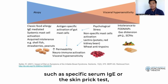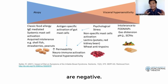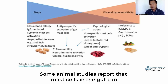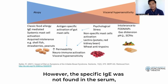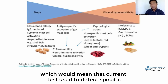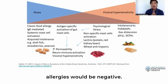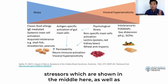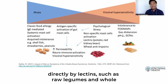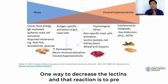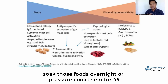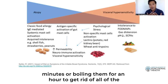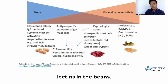Some animal studies report that mast cells in the gut can react to food; however, specific IgE was not found in the serum, meaning current tests used to detect specific allergies would be negative. Gut mast cells can also be activated by psychological stressors, as well as directly by lectins such as raw legumes and whole grains like wheat. One way to decrease lectins and that reaction is to pre-soak those foods overnight, pressure cook them for 45 minutes, or boil them for an hour.